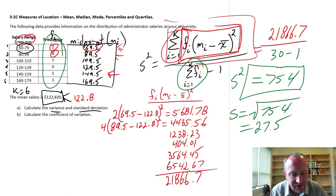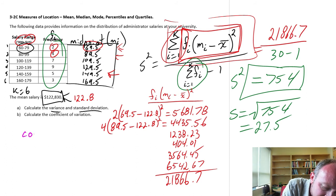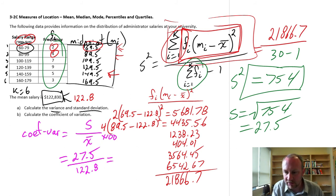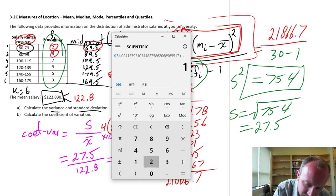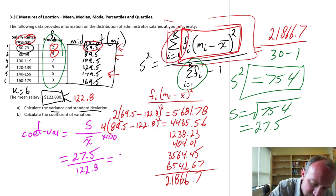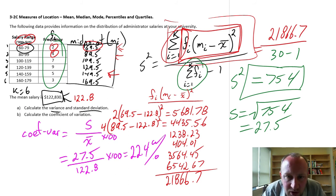So let's go through part B. Calculate the coefficient of variation. I'm going to move over to this corner here. My coefficient of variation. This is our standard deviation divided by our sample mean. And we times it by 100 so that we have a percentage. So 27.5 divided by 122.8. And so that now gives us 22.4 percent. So our standard deviation is 22.4 percent of our mean.